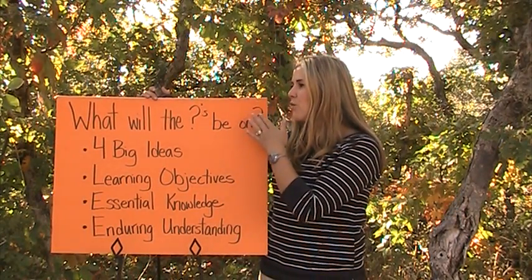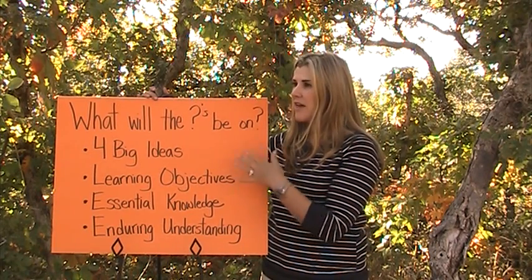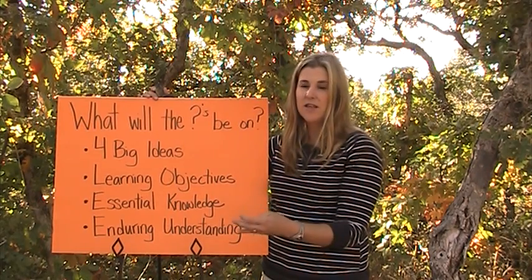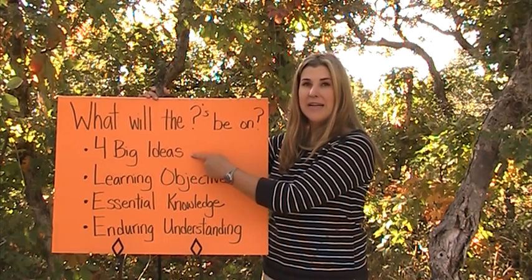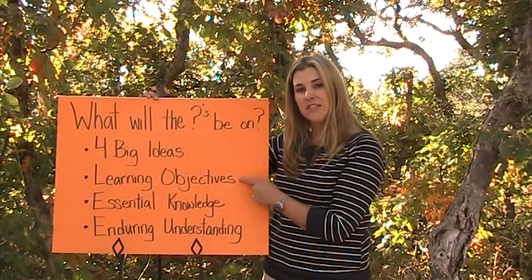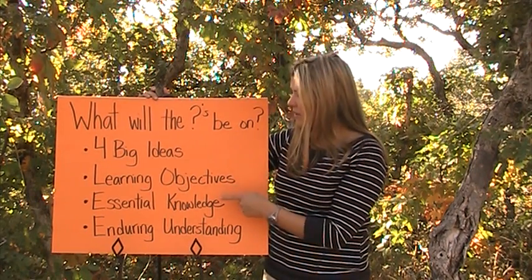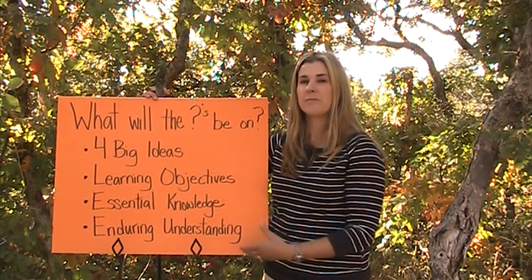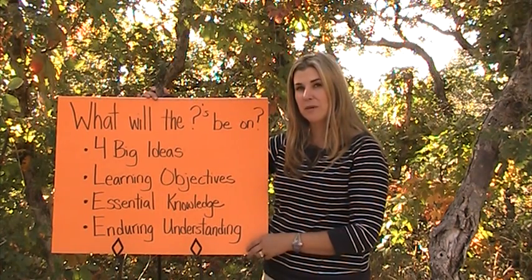Finally, what will the questions be about? The College Board has gone through the course and broken it into four big ideas. These four big ideas are further broken down into learning objectives — what students need to be able to do — essential knowledge — what students need to know — and enduring understandings — concepts that are important for students to understand.